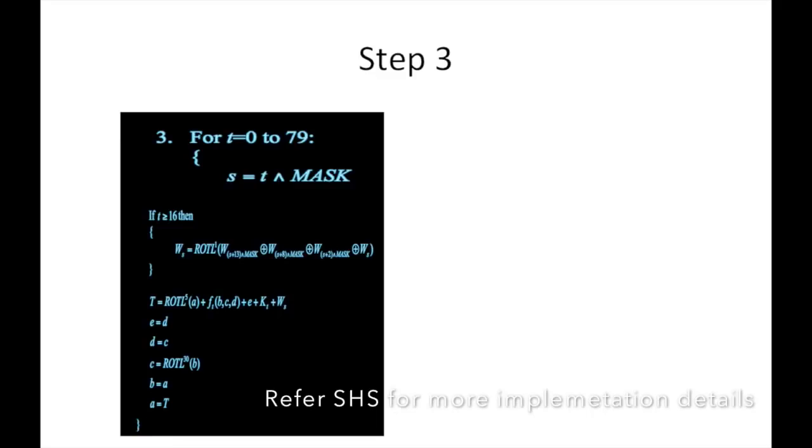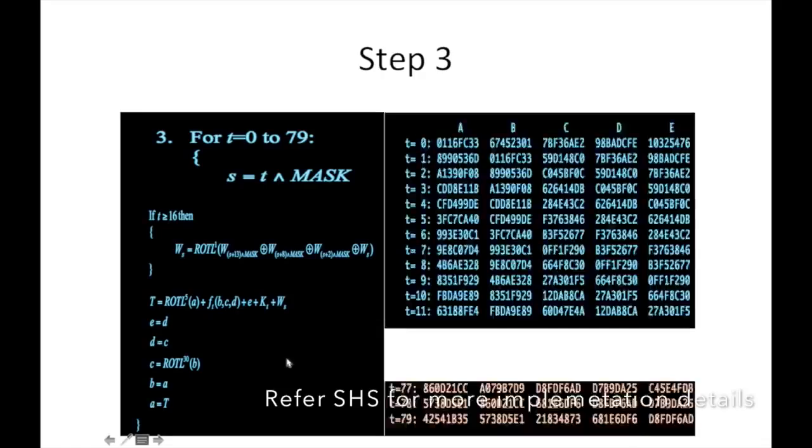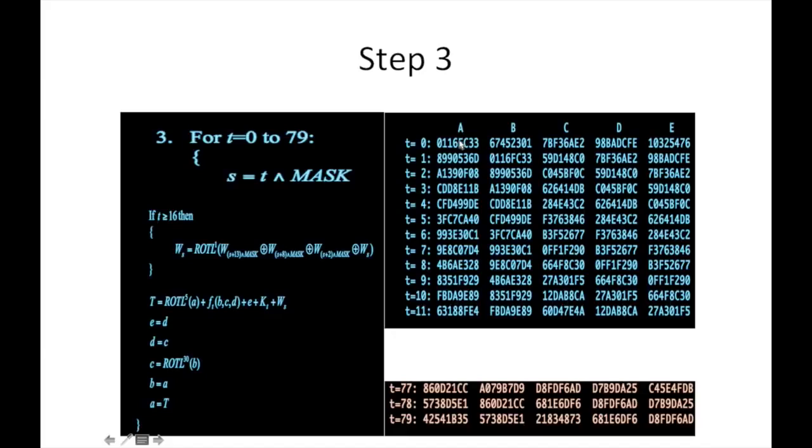The third step is we have to iterate from 0 to 79, because the SHA-1 function operates from f0 to f79. In this case, we have to apply two mathematics: we have to calculate Ws as defined in the Secure Hash Standard, and finally we have to calculate all five working variable values E, D, C, B, and A. For demo, I have calculated t equals 0, then what is the working variable value of A, B, C, D, and E. Similarly, we came to know at tth value of 79 what is the value of A, B, C, D, and E.